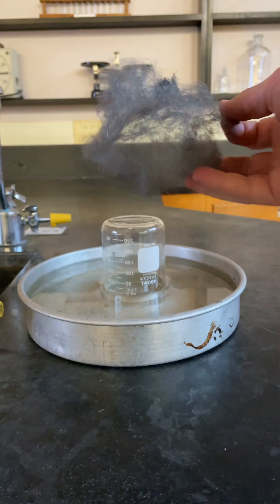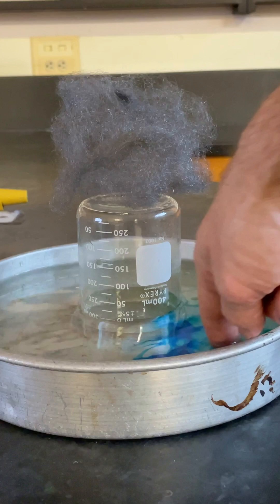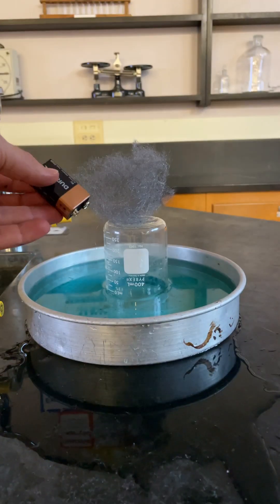Fluff steel wool for max surface area exposure. Blue dye to see the water and a 9-volt starts the reaction. Quickly cover before the air heats.